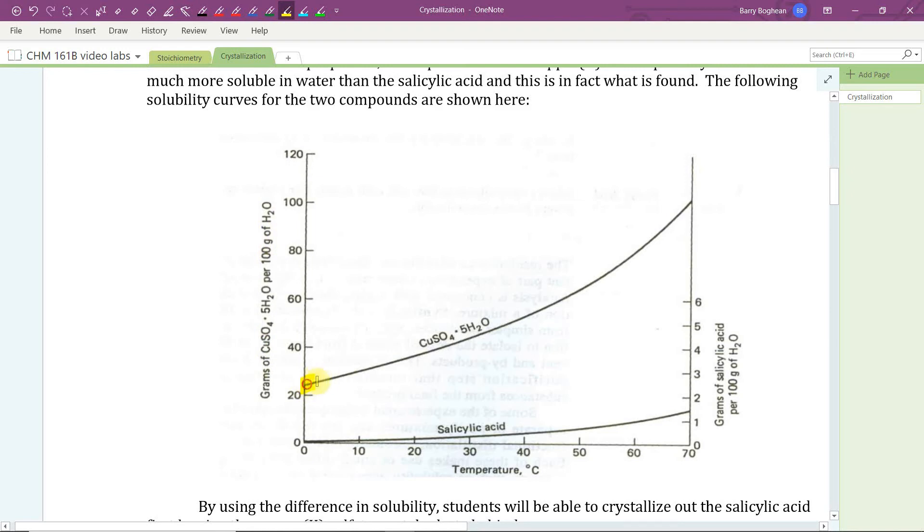It rises rather quickly with temperature. At 70 degrees C, the solubility exceeds 100 grams of CSP per 100 grams of water.